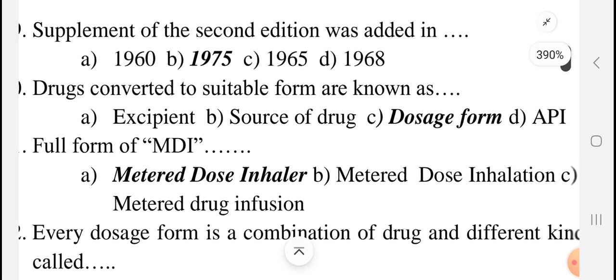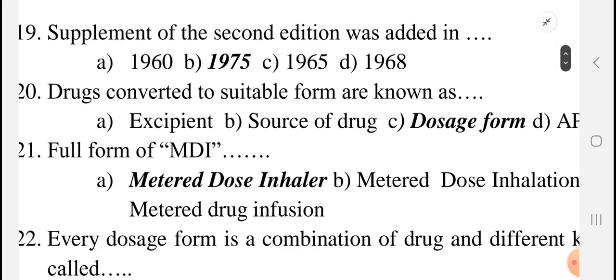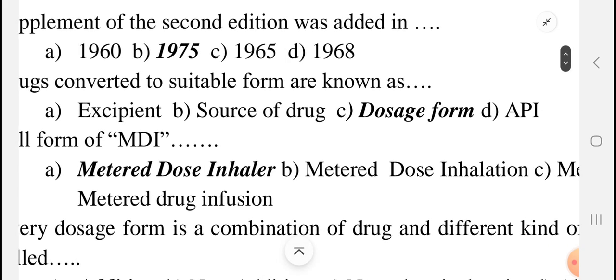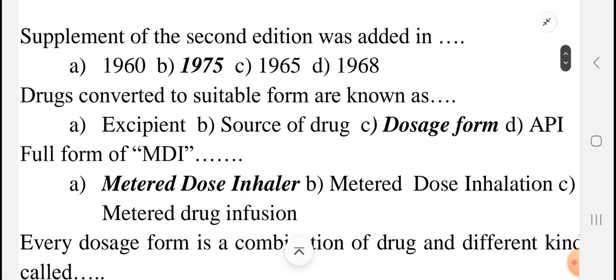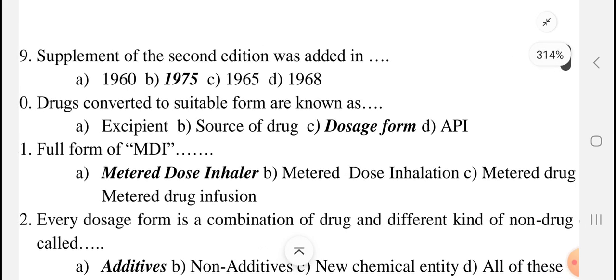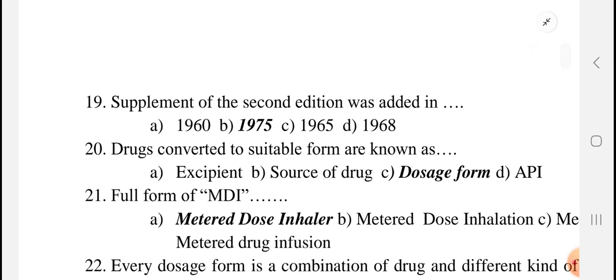Now the next question: drugs which are converted into a suitable form — that is known as what? Options are excipient, source of drug, dosage form, API. API means active pharmaceutical ingredient — that is your drug like Paracetamol or Diclofenac. The remaining components like Talc, Starch, binders, granulating agents, and coloring agents are excipients. A drug converted into a suitable form is known as a Dosage Form — option C.